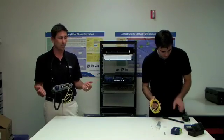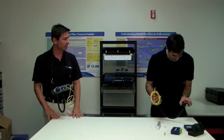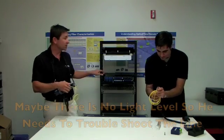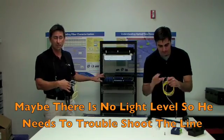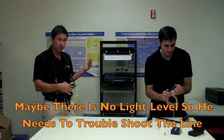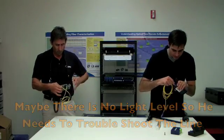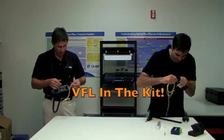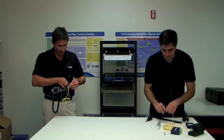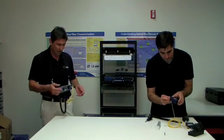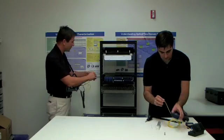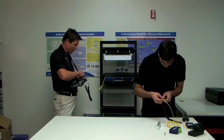Done with that test cycle, and you're just still checking the patch cord. So, maybe there is no light level on this, maybe there's no light present on this channel, and he needs to troubleshoot that line. Well, we put a VFL into the kit, so he just pulls his patch cord out of the power meter, puts it into the VFL, and plugs his test lead into the optical port.